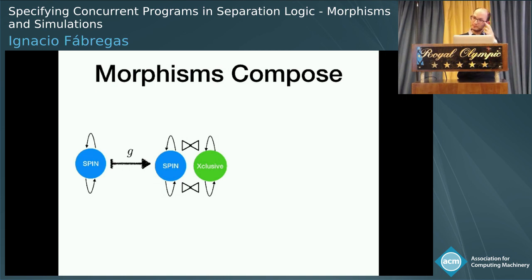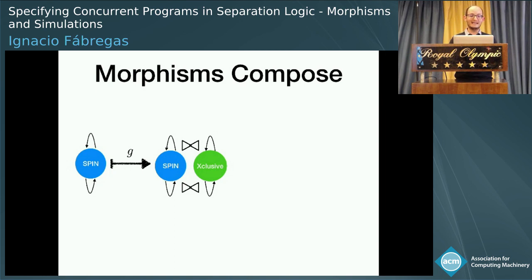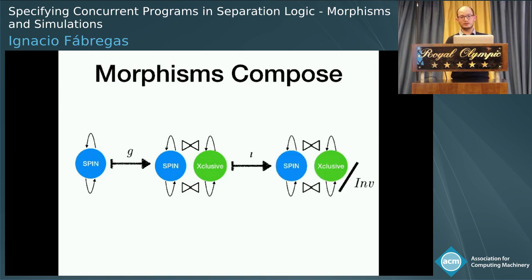We also have the notion of subresource. In some cases, we will need to restrict the state space of the resource — we mod out by some kind of invariant, some property we want to ensure across all states in the morphism. This example shows how morphisms compose: we were morphing the spin lock to an exclusive lock, but we need to restrict the state space a little because some states in spin did not match with states in the exclusive resource. Details are in the paper.